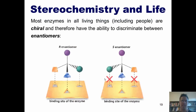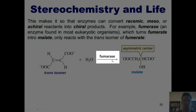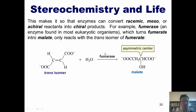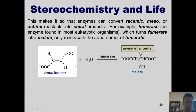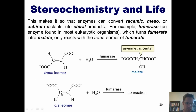This brings us back to a topic I introduced at the beginning of this chapter. Most enzymes in all living things, including people, are chiral and therefore have the ability to discriminate between enantiomers. This makes it so that enzymes can convert racemic, meso, or achiral reactants into chiral products. For example, fumarase — an enzyme found in most eukaryotic organisms — catalyzes a reaction that converts fumarate into malate. Interestingly, because fumarase is chiral, it can distinguish between the trans-isomer of fumarate and the cis-isomer of fumarate. And in fact, fumarase will not react with the cis-isomer.